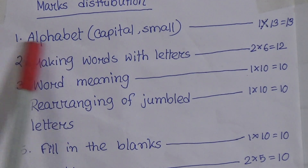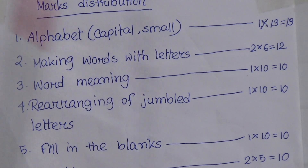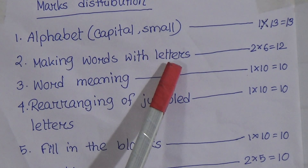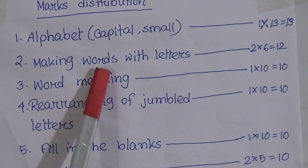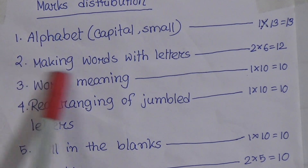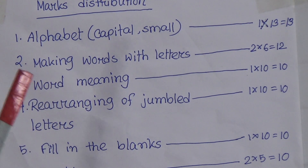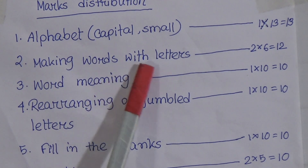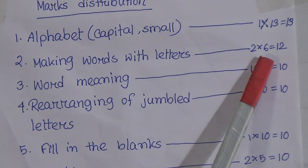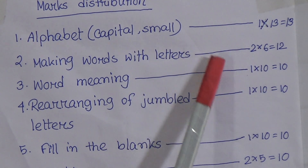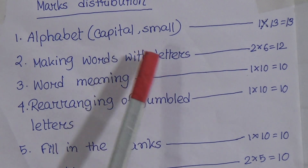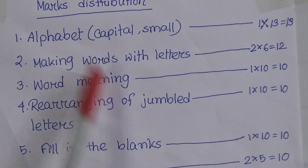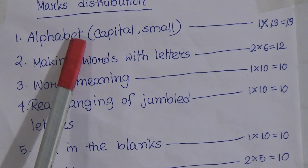Number two is making words with letters. We have learned some letters for making words. You will get six letters, and with each letter you have to write two words. This is word making — making words with the letters.